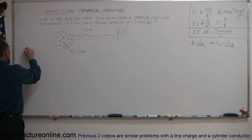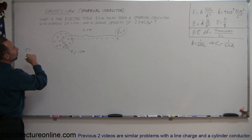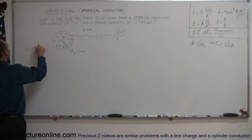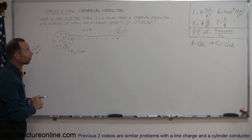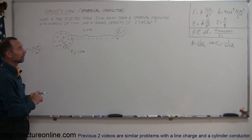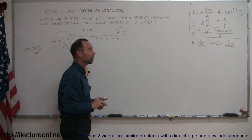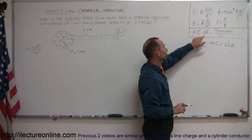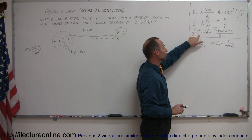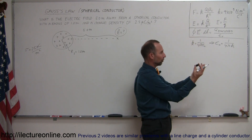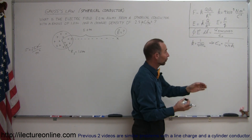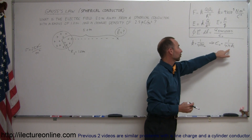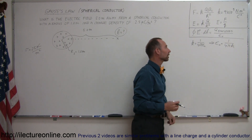The surface charge density is equal to 2.5 microcoulombs per square meter. Now, if you didn't use Gauss's law, that would be a very difficult problem to calculate. But Gauss's law makes it a lot easier by stating that the integral of the electric field strength at the Gaussian surface times its area equals all the charge enclosed divided by epsilon sub nought, and epsilon sub nought is related to k via a specific equation.